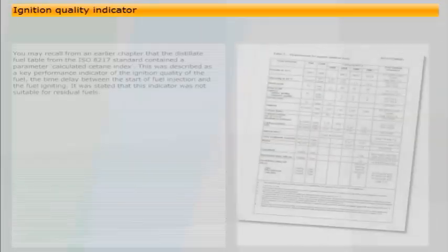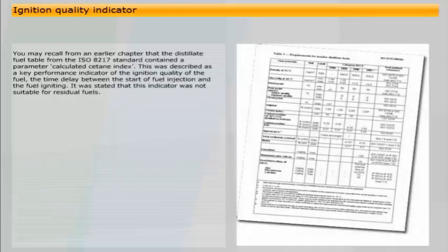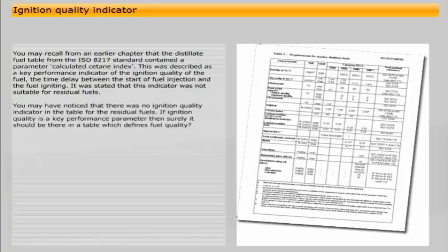You may recall from an earlier chapter that the distillate fuel table from the ISO 8217 standard contained a parameter called calculated cetane index. This was described as a key performance indicator of the ignition quality of the fuel, the time delay between the start of fuel injection and the fuel igniting. It was stated that this indicator was not suitable for residual fuels. You may have noticed that there was no ignition quality indicator in the table for the residual fuels. If ignition quality is a key performance parameter, then surely it should be there in a table which defines fuel quality.